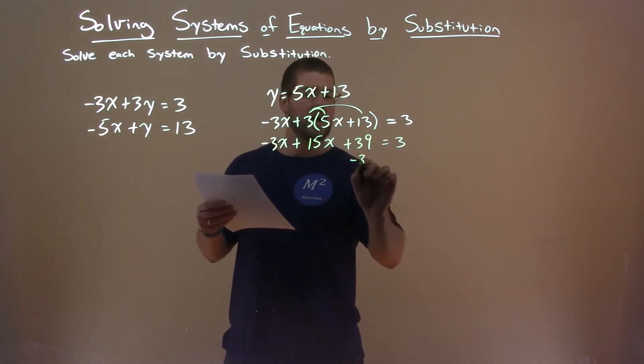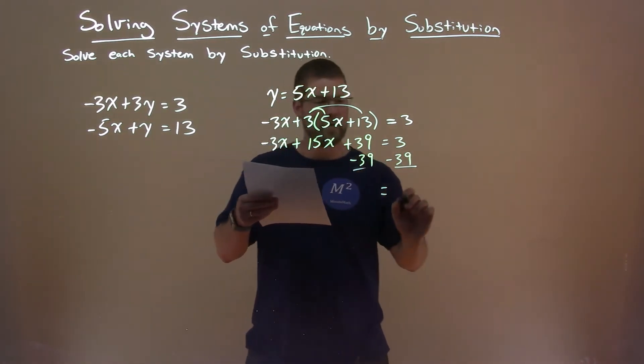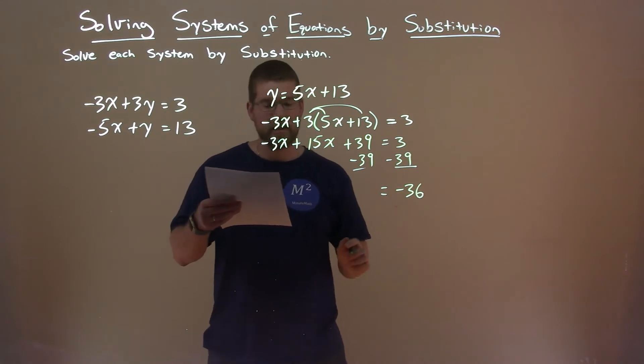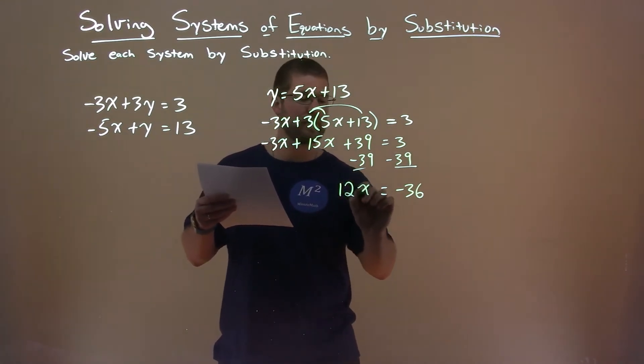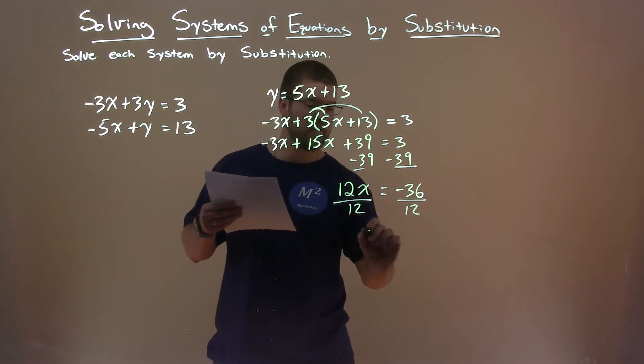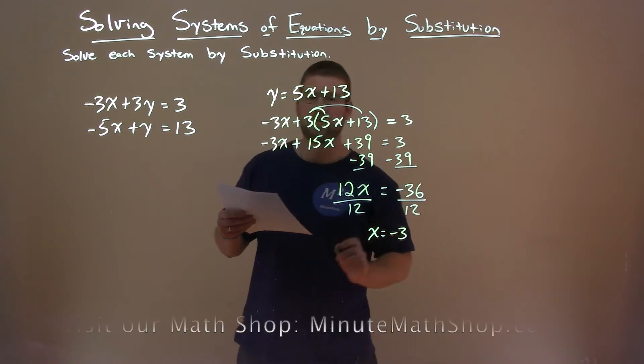We subtract 39 from both sides. Let's get our like terms together: 3 - 39 is -36, and -3x + 15x is 12x. Divide both sides by 12, and we get x = -36/12, which is -3.